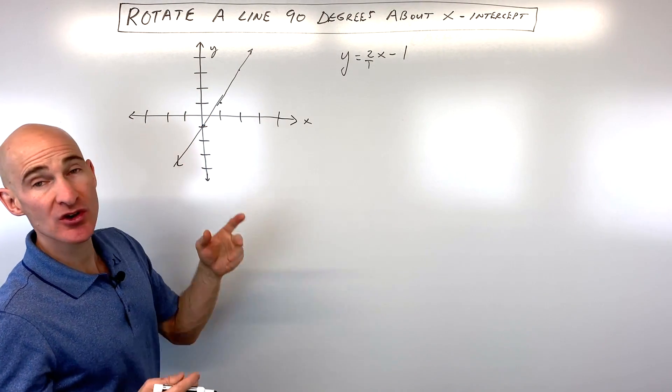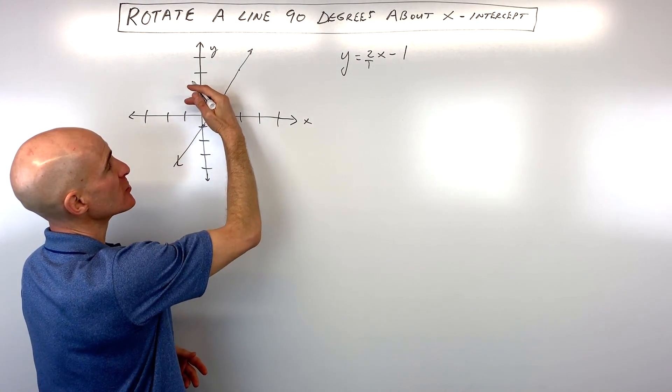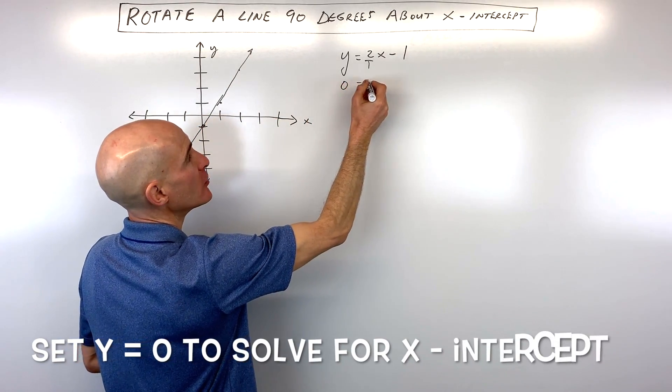So the question is, where does it cross the x-axis? The way you can find out what this point is, is by setting the y-value equal to 0. Because when you're crossing the x-axis, you're not going up or down. We know that the y-value is 0.